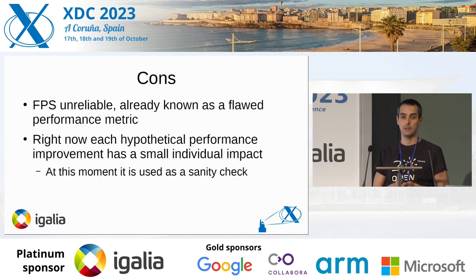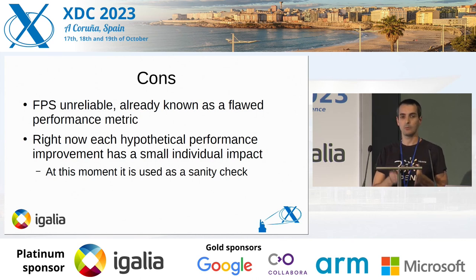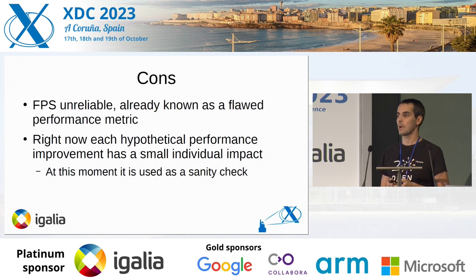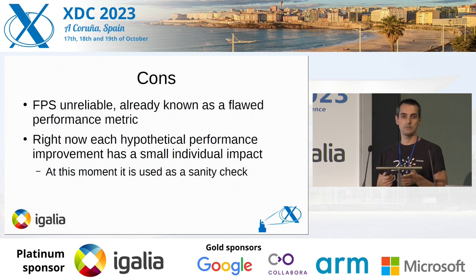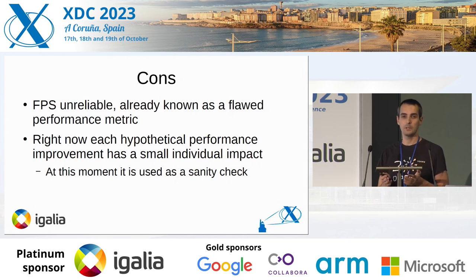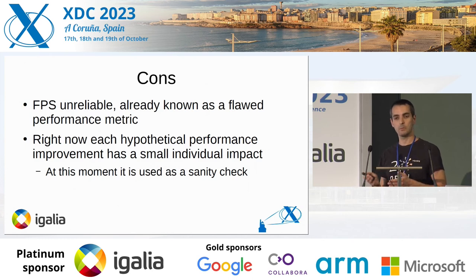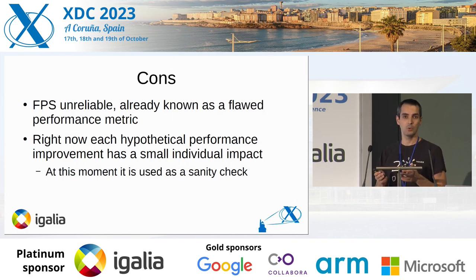The problems: the frames per second is unreliable. For example, if you run the same trace with the same things, sometimes you get a different value because there are a lot of things that can affect the frames per second. And now that we have done this performance work, getting an improvement that is visible just with the frames per second measure is minimal. So at this moment we use the frames per second measure mostly as a sanity check — we implement an improvement and at least the frames per second shouldn't go down.